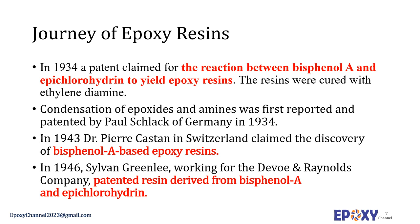In 1943, Dr. Pierre Castan in Switzerland claimed the discovery of bisphenol A-based epoxy resins. Castan's work was licensed by Ciba of Switzerland, which went on to become one of the three major epoxy resin producers worldwide. Ciba's epoxy business was spun off as Vantico, which was subsequently sold and became the Advanced Materials business unit of Huntsman Corporation of the United States.